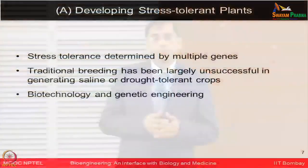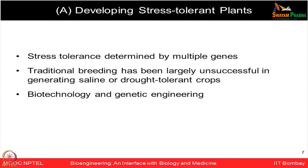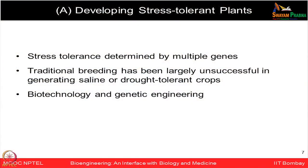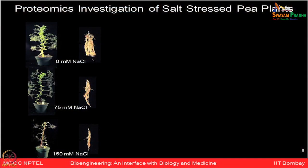The first case study is on developing stress-tolerant plants, specifically salt-tolerant plants. Traditional breeding has been largely unsuccessful in generating highly tolerant saline or drought-tolerant crops. In this study, researchers looked at pea plants subjected to different salt stress conditions — from 0 to 75 to 150 millimolar — to examine how medium and high salt concentrations affect the pea plant.